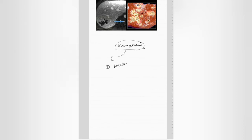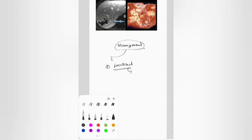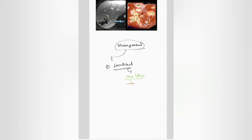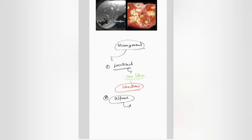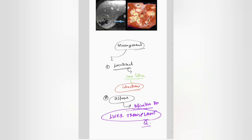Moving on to management. First, if the disease is localized — that is, if it is contained to one lobe — then there is a possibility of doing a lobectomy. But what happens is that in most cases, the disease is diffuse or widespread. So the definitive treatment or management is liver transplant. Only liver transplant will be beneficial for patients with diffuse spread of Carole's disease.